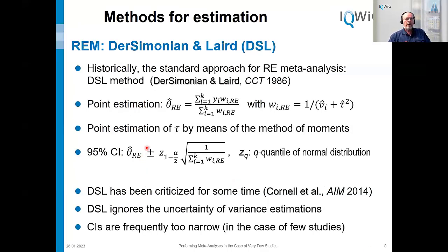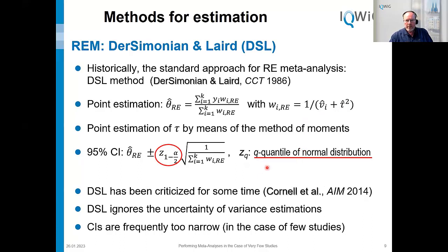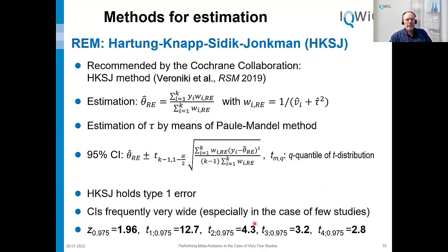In the random effects model, the standard method for a long time was the DerSimonian-Laird method, which also uses the normal distribution. However, because it includes the additional variance component tau-squared, it has disadvantages — especially with few studies — because it ignores the uncertainty of the variance estimation. The consequence is that confidence intervals are frequently too narrow and p-values are too small. This method has been criticized for some time, and the search for alternatives started from the Cochrane Collaboration.